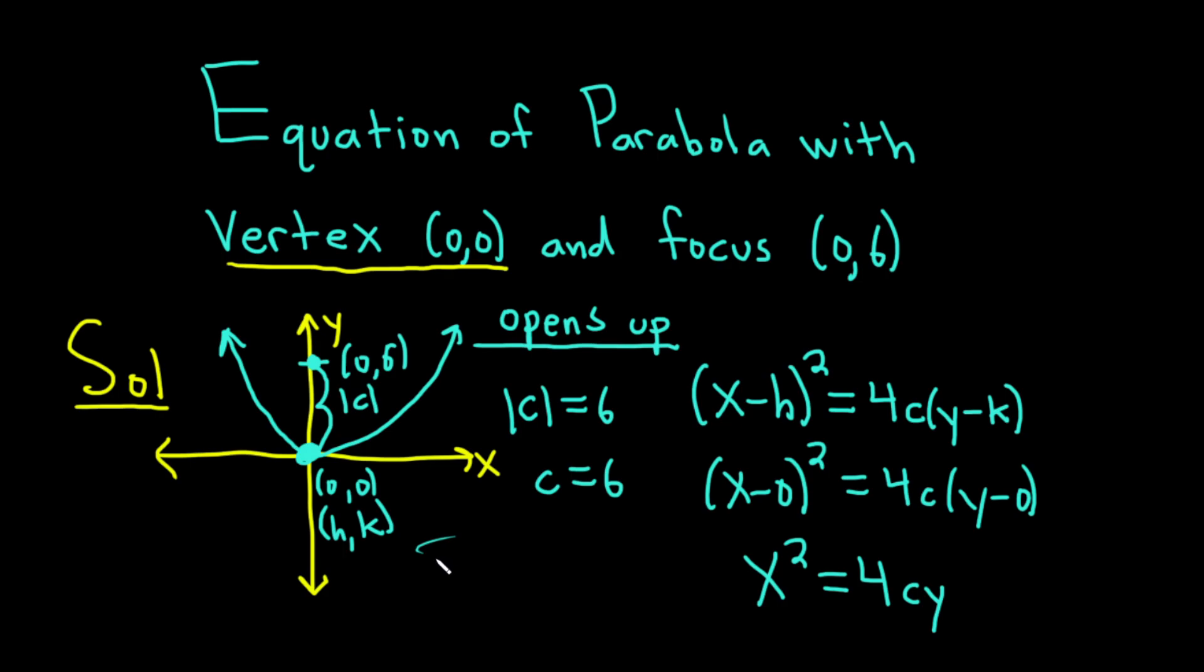So now all we do is we replace c with 6. So our final answer is going to be x² equals 4... I'll show one extra step. So c, which is 6, times y. So x² is equal to 4 times 6, which is 24. And so we get 24y. So that would be the equation of the parabola with vertex (0,0) and focus (0,6).